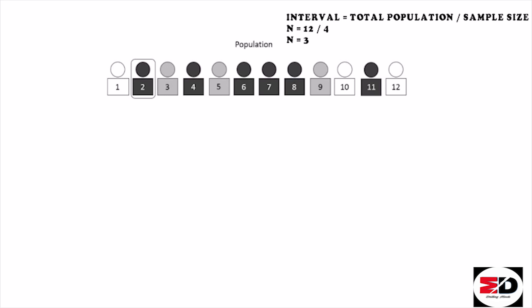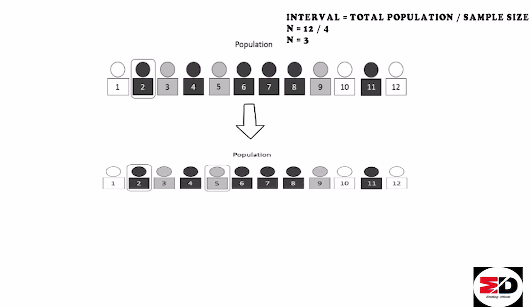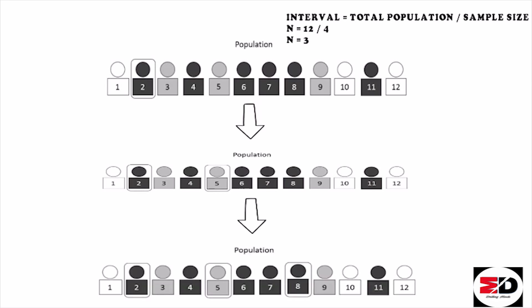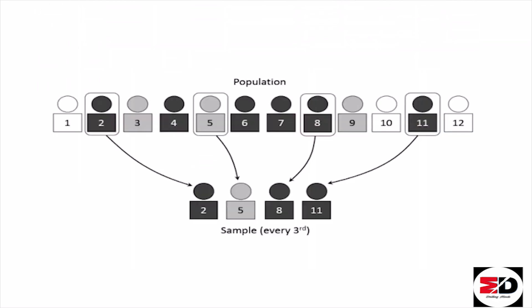So in this example, the first number is 2 (our starting point), then we select every 3rd individual: 5, then 8, and finally 11. If you look at these selected numbers — 2, 5, 8, and 11 — there is a fixed interval between each one. This sampling technique is very popular among researchers due to its simplicity, though it can be time-consuming.